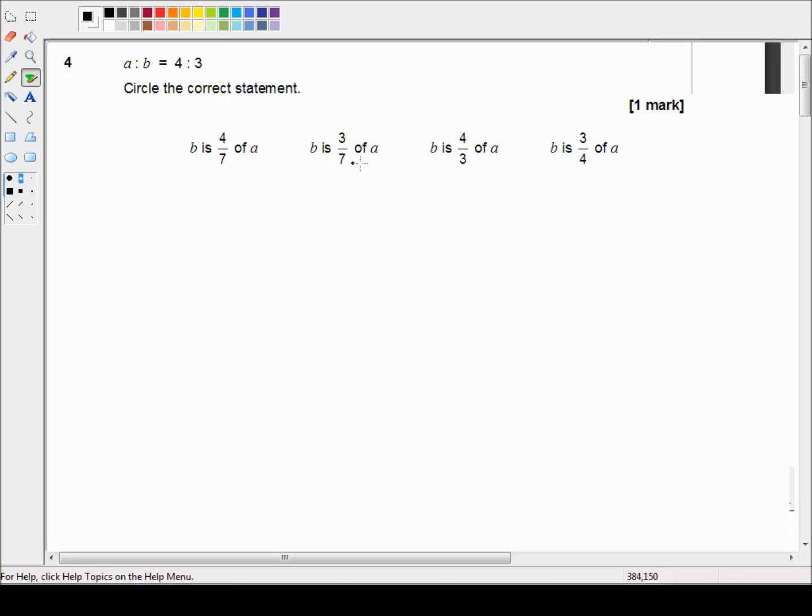Alright so let's look at this. I think the easiest way to do it is just to write the ratio as A over B is equal to 4 over 3. And from there we can say that A is equal to 4 thirds of B. And if A is 4 thirds of B then B must be 3 quarters of A and therefore this is the correct answer for one mark.